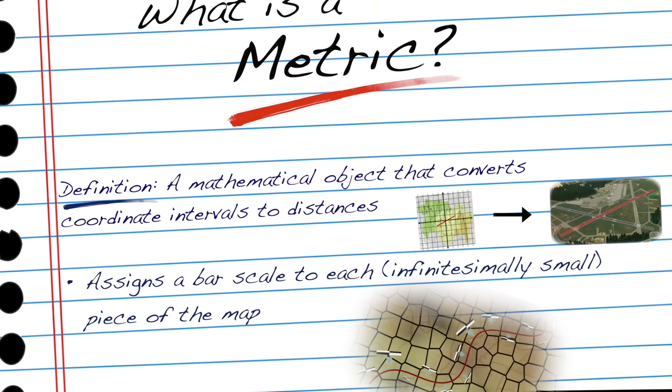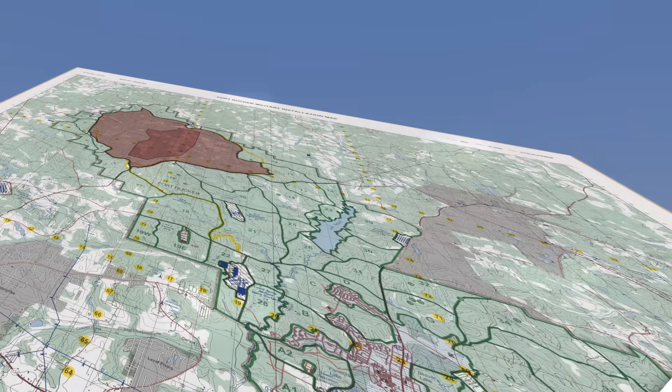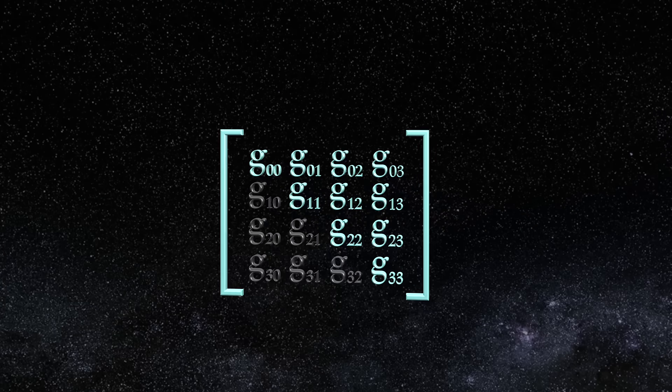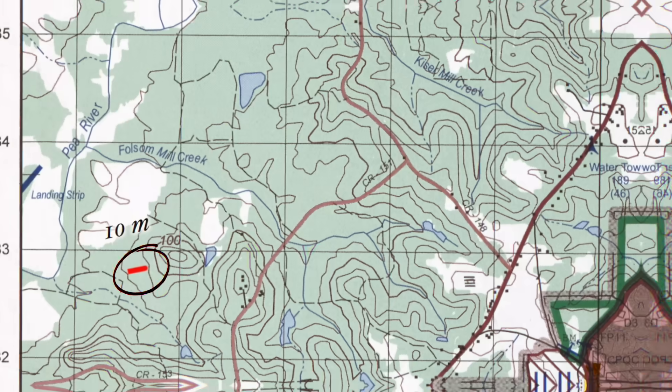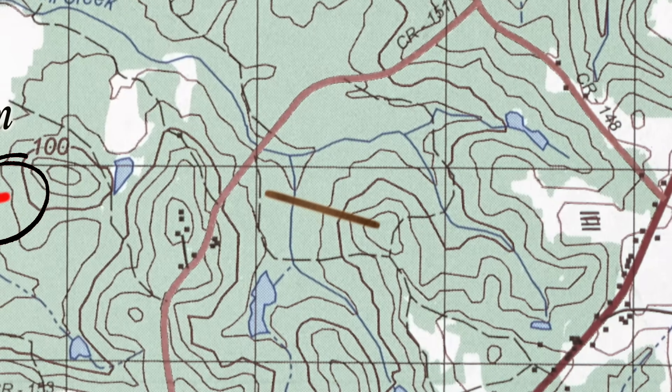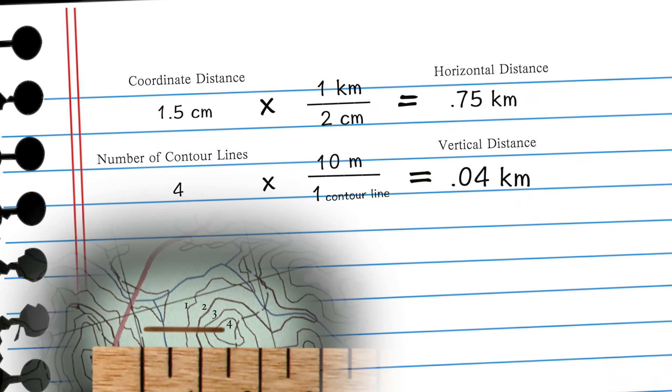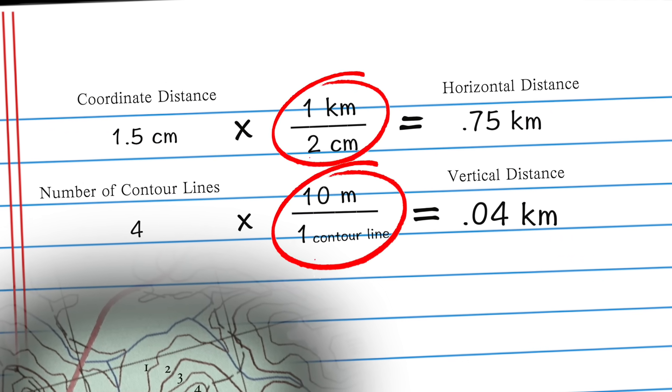So now we have a better understanding of what the metric does. Assigns a bar scale to each piece of the map. But where do all these extra numbers of the tensor come from? Well, maybe you noticed that our Fort Rucker map required two components at each point to define its metric. One for the horizontal distance conversion, and one for the vertical distance conversion.